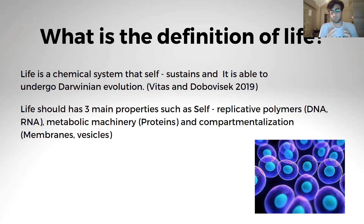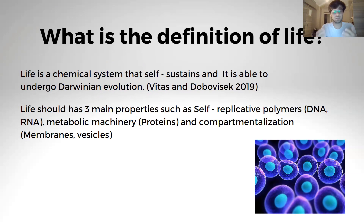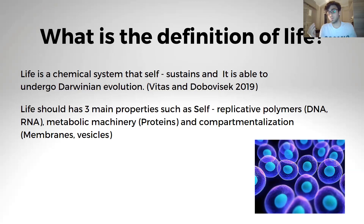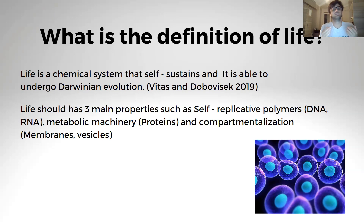Think of a cell with energy input and output. We need energy to carry out our metabolic reactions. We uptake energy, and inside our cells that energy is consumed or transformed into different variations, producing waste products as energy outputs. Basically, a chemical system is based on energy transformation and should be self-sustained.